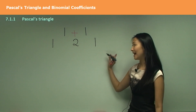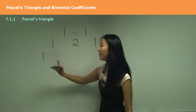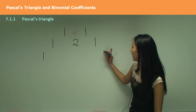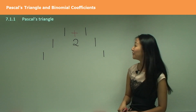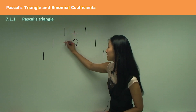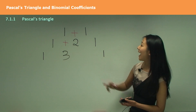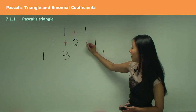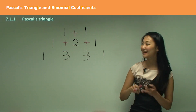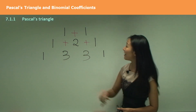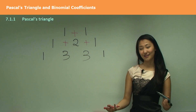Let's find out the next series of numbers. Remember, it always starts off with one and always ends with one. And to find the numbers in the middle, we add together one and two, which gives us three. And two and one gives us three as well. Now can you see how it forms that triangle shape? And that's why we call it Pascal's Triangle.